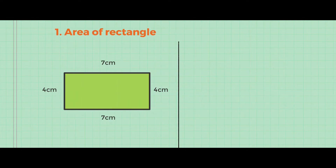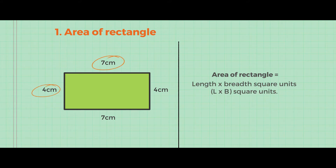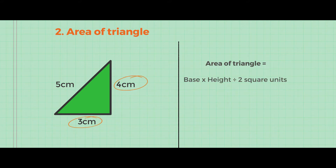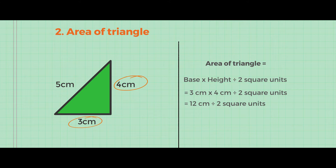Let's calculate the area of the rectangle first. Area of a rectangle is equal to length times breadth square units. That is equal to 7 centimetre times 4 centimetre, which equals 28 square centimetre. Number two, area of a triangle is equal to base times height divided by 2 square units. That's equal to 3 centimetre times 4 centimetre divided by 2, which equals 12 square centimetre divided by 2, giving 6 square centimetre.